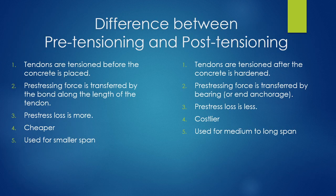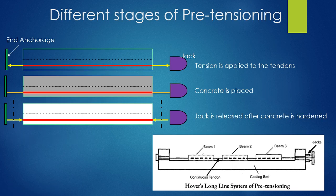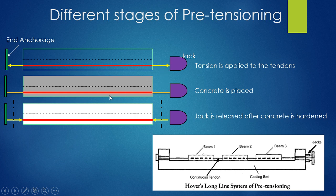The difference between pre-tensioning and post-tensioning: in pre-tensioning, tendons are tensioned before the concrete is placed; in post-tensioning, it is done after the concrete has hardened. Prestress force is transferred by bond along the length of the tendon in pre-tensioning, but by end bearing in post-tensioning. Prestress loss is more in pre-tensioning, it is cheaper, and used for smaller spans; post-tensioning is costlier but used for medium to long spans.